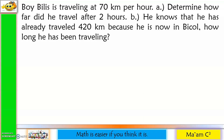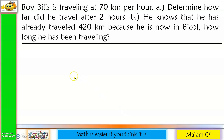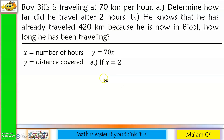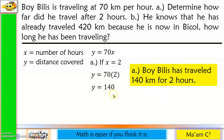Boy Belize is traveling at 70 kilometers per hour. Letter A: determine how far he traveled after 2 hours. Let x be the number of hours and y be the total distance covered. Since he travels 70 kilometers per hour, y equals 70x. If x equals 2, then y equals 70 times 2, which is 140. Therefore, Boy Belize has traveled 140 kilometers after 2 hours.